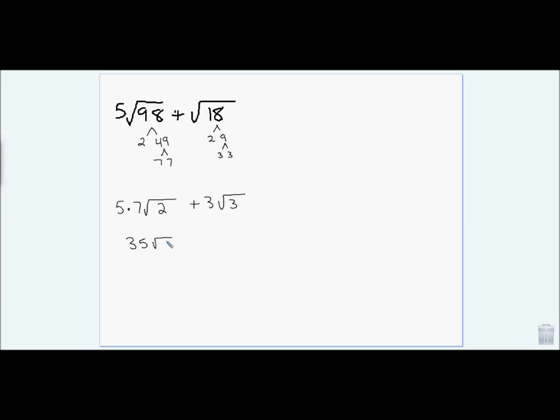And here I can pull out my 3. So I get 35 root 2 plus 3. Sorry, that should have been a 2, root 2, which gives me 38 times the square root of 2.